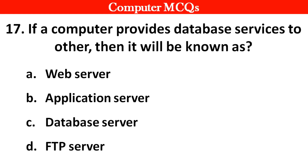Next question. If a computer provides database service to others, then it will be known as — Options A: Web server, B: Application server, C: Database server, D: FTP server. Right answer is option C: Database server.